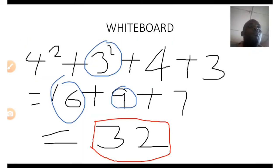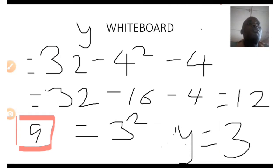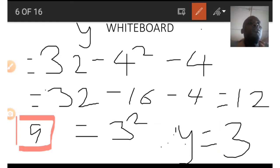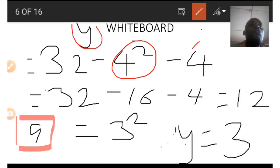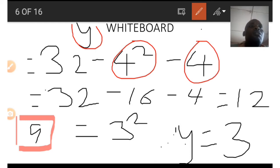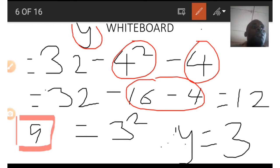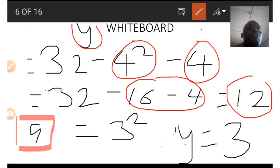We let y represent the number we are looking for. First we square 4 and subtract it from 32, and also subtract the number 4. So 4 squared is 16, and 16 plus 4 equals 20. When we subtract 20 from 32 we get 12.